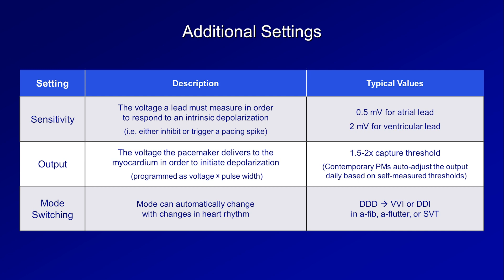There are also settings regarding rate modulation, including the range of heart rates, the speed of acceleration and deceleration of heart rates, and the degree of activity required to trigger a change in rate.